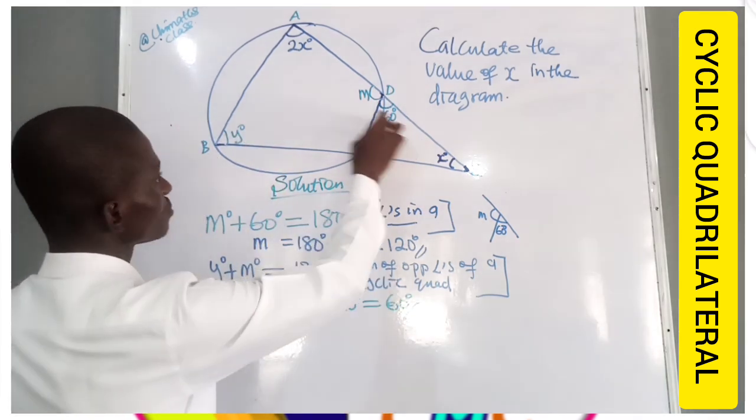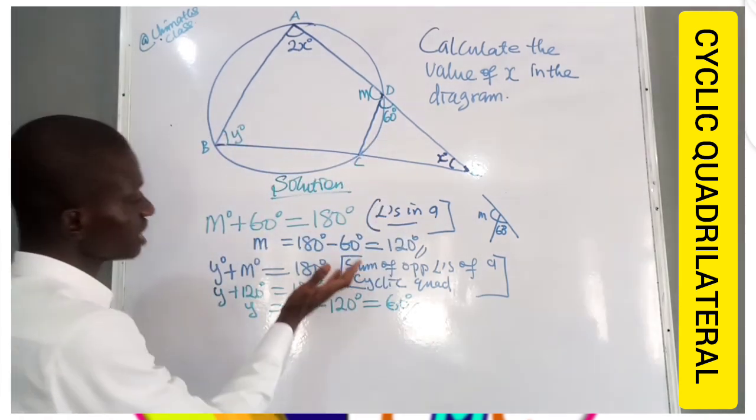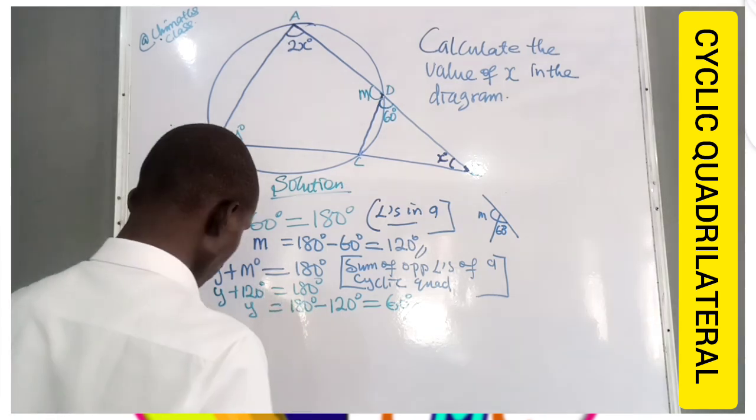So an exterior angle of a cyclic quadrilateral is equal to opposite interior angle. That is Y. Y is equal to 60 degrees. Or you can still follow this approach. All right.